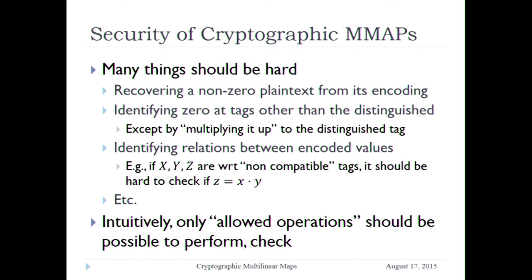So that's the syntax — this is the functionality. Now let me say something about security, and I will return to this many times. I described what you should be able to compute. What are the things you should not be able to compute? Intuitively, everything else. It should be hard to recover a non-zero plaintext from its encoding. Identifying zeros at tags that are not at the designated tag or cannot be brought there by multiplying should be hard. The intuition is we really would like a construction where we don't know how to attack any of these other things.